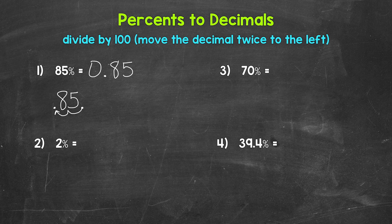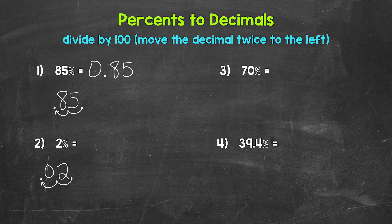Let's move on to number two, where we have 2%. I'm going to rewrite this underneath with a decimal. And now we need to divide by 100. So let's move the decimal once, twice, to the left. And we need to fill this gap with a zero. So we get 0.02. 2% equals 0.02 — two hundredths as a decimal.